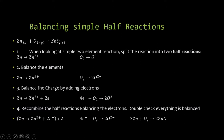For a simple example: zinc plus oxygen forms zinc oxide. We split this compound into its two component charges — oxygen is usually two minus and zinc is usually two plus. Now splitting into half-reactions: zinc goes to Zn²⁺, and O₂ goes to O²⁻. First, make sure the elements are balanced — one zinc on the left, one on the right; two oxygens on the left, two on the right.